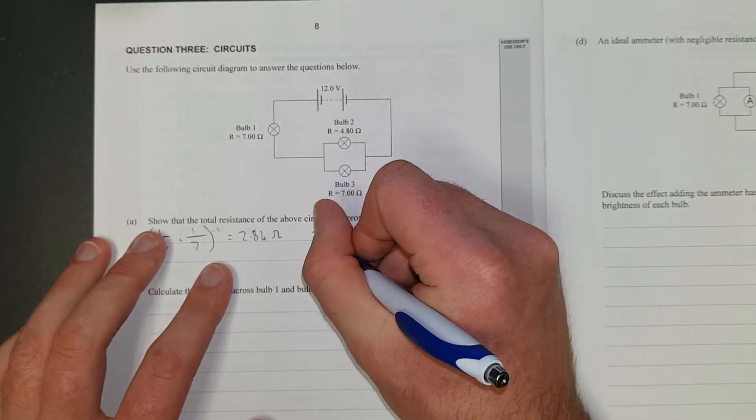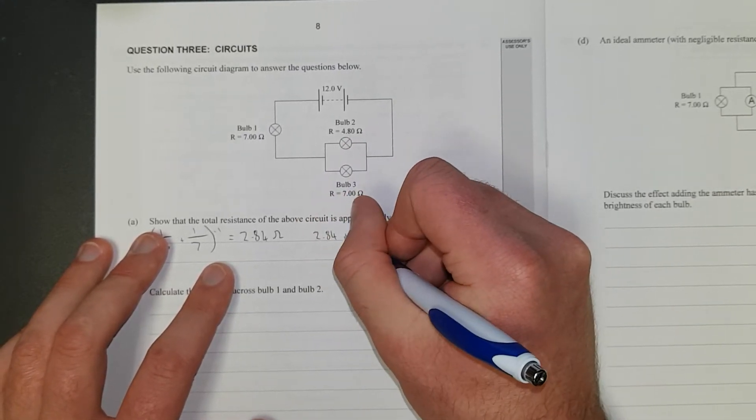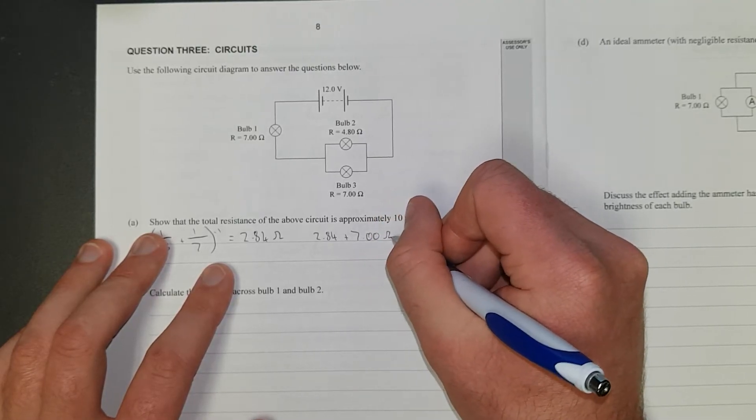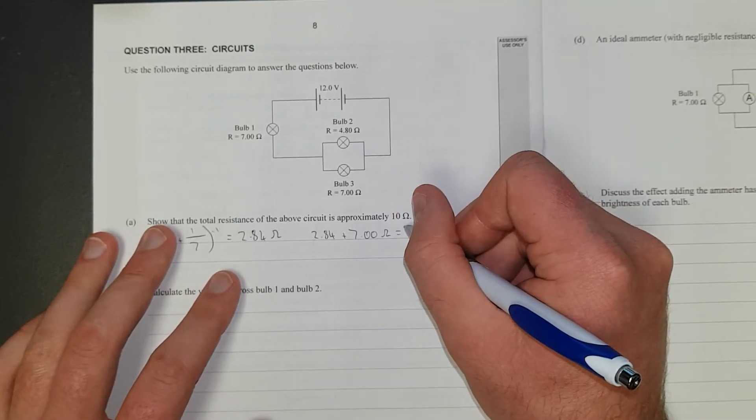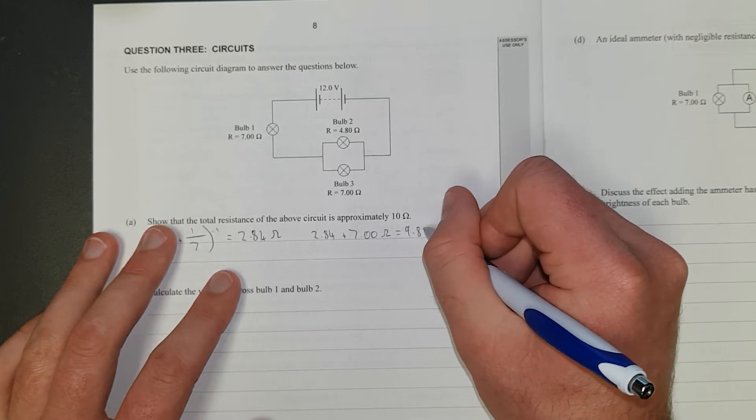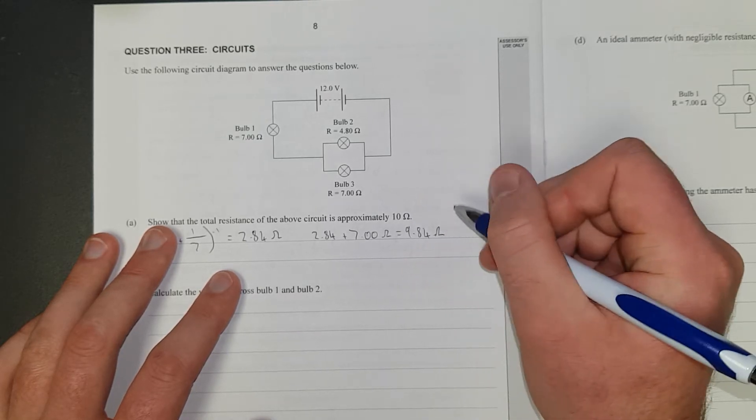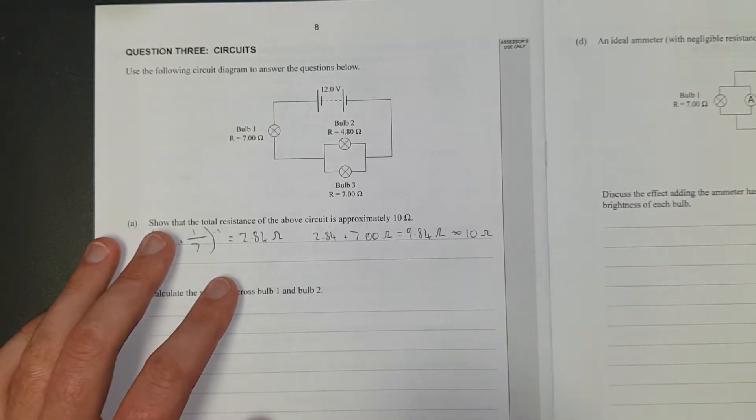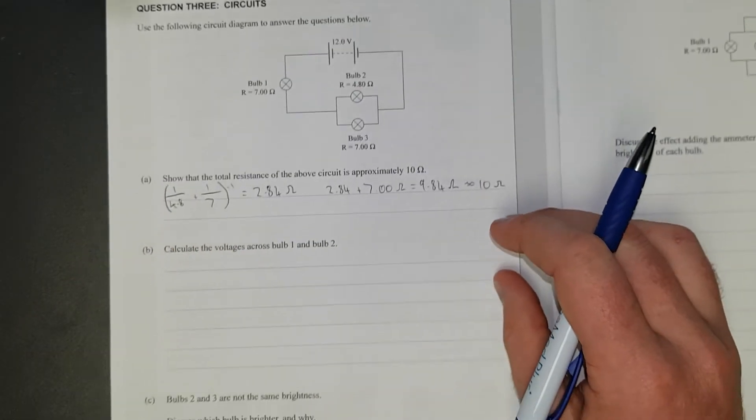And then in series, 2.84 plus 7.00 ohms gives me 9.84, which is close enough to 10 ohms. Close enough. There we go.